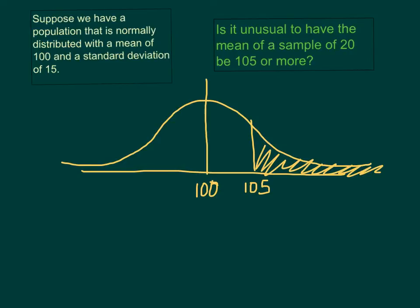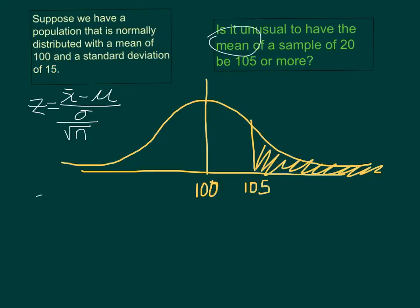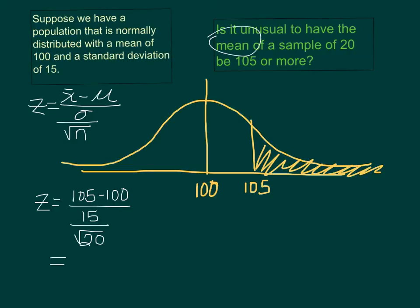So again we're looking for the mean value, so we're going to be using the special z-score formula. So it's going to use our sample mean minus our population mean divided by the standard deviation over the square root of n. So in this case our z is going to be found by 105 minus 100, divided by 15 over the square root of 20. That's going to give us a z-score of 1.49.